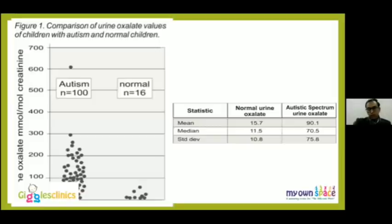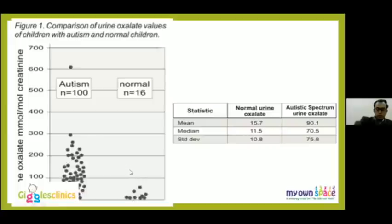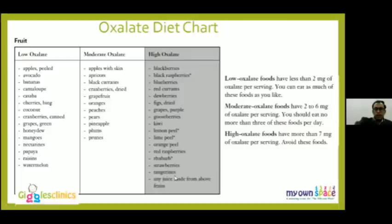Research has confirmed that oxalate levels in urine samples from spectrum children range from 100–300, compared to neurotypical children whose levels are around 30–40. This underscores the importance of oxalate management in autism. A list of high- and low-oxalate food products is typically shared with parents as part of a dietary plan.